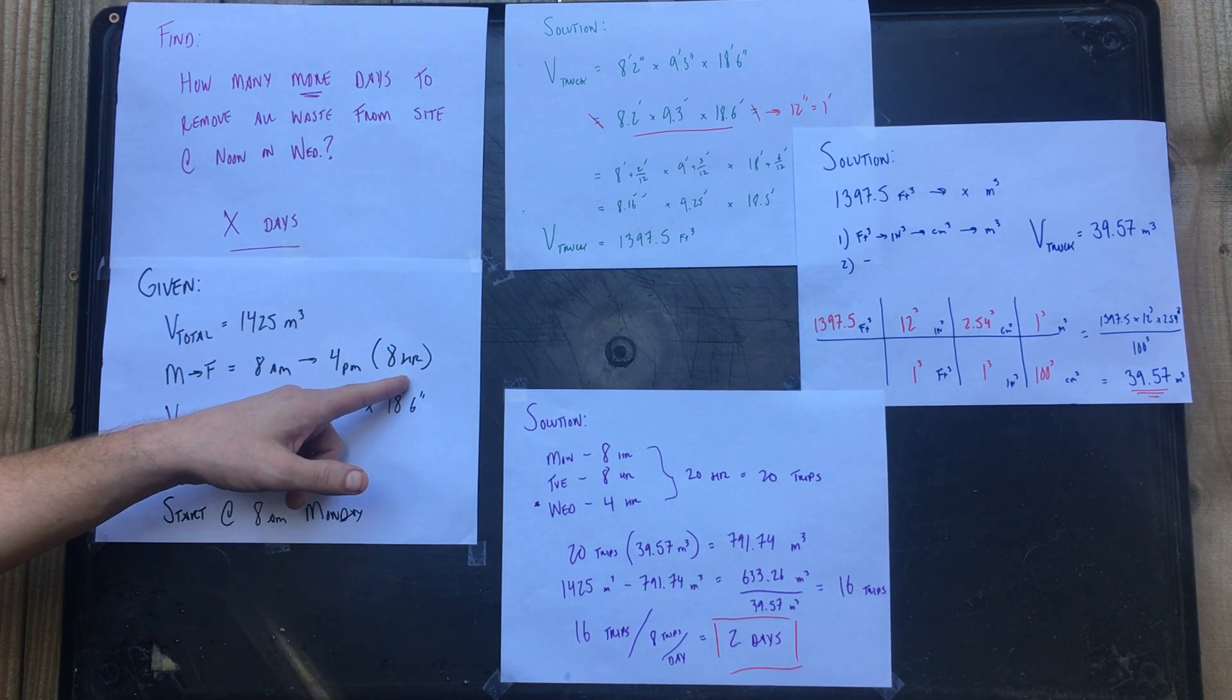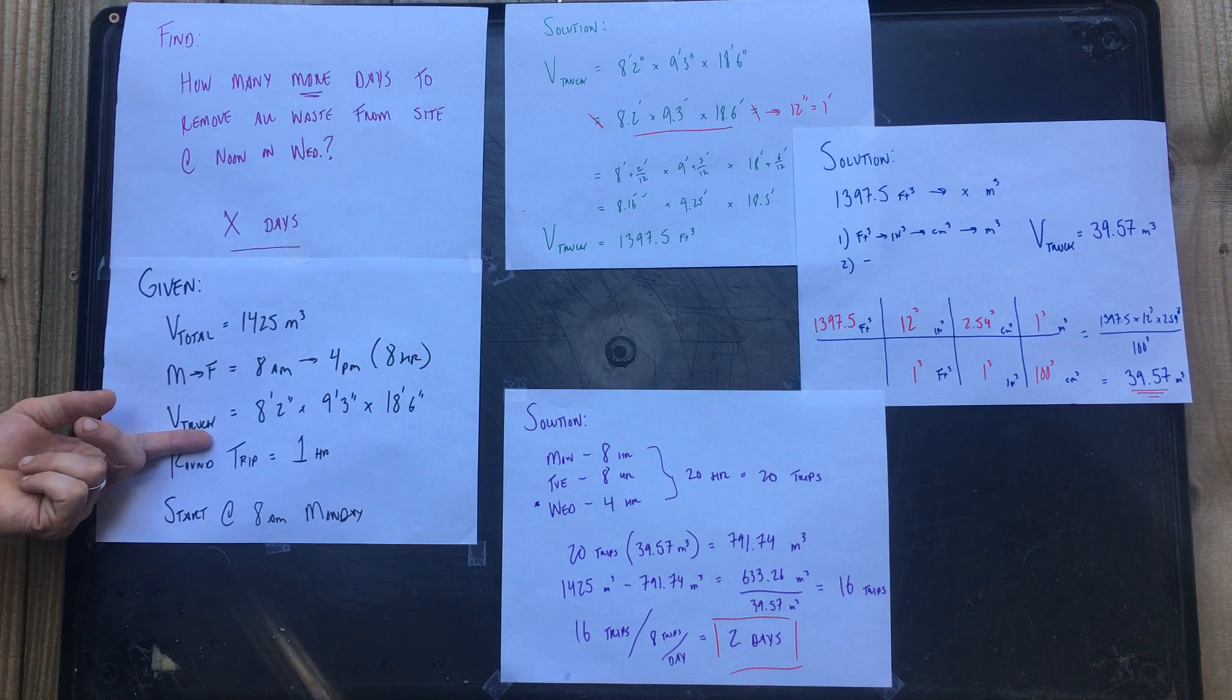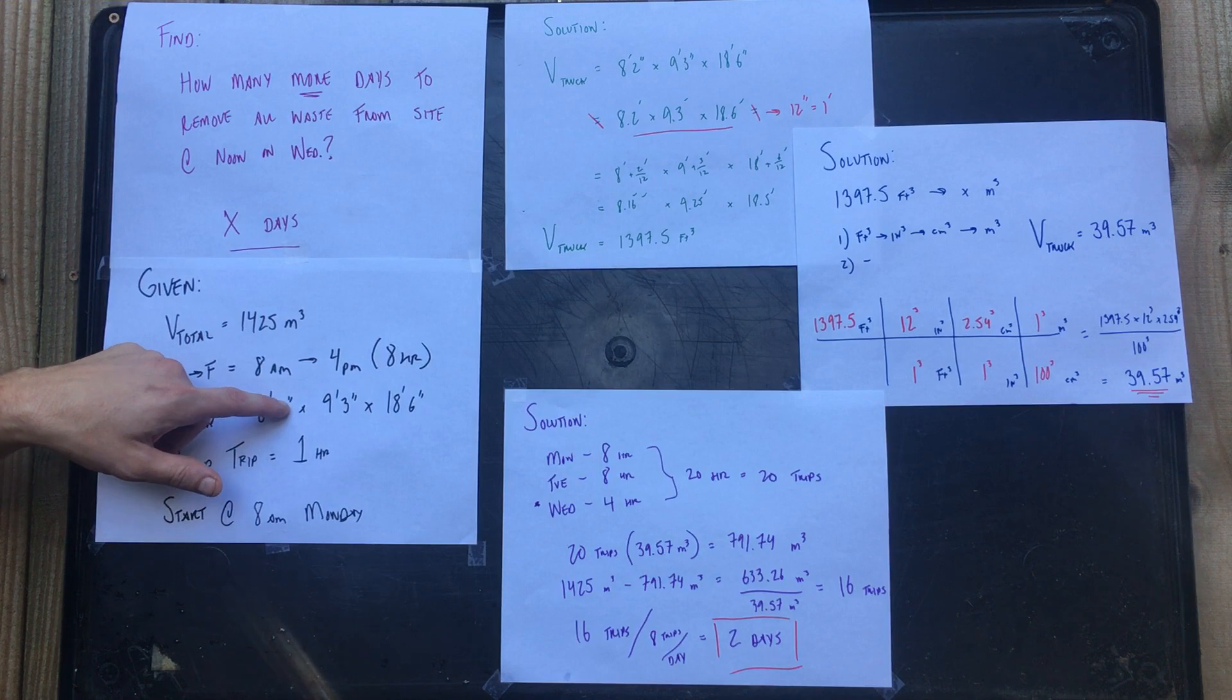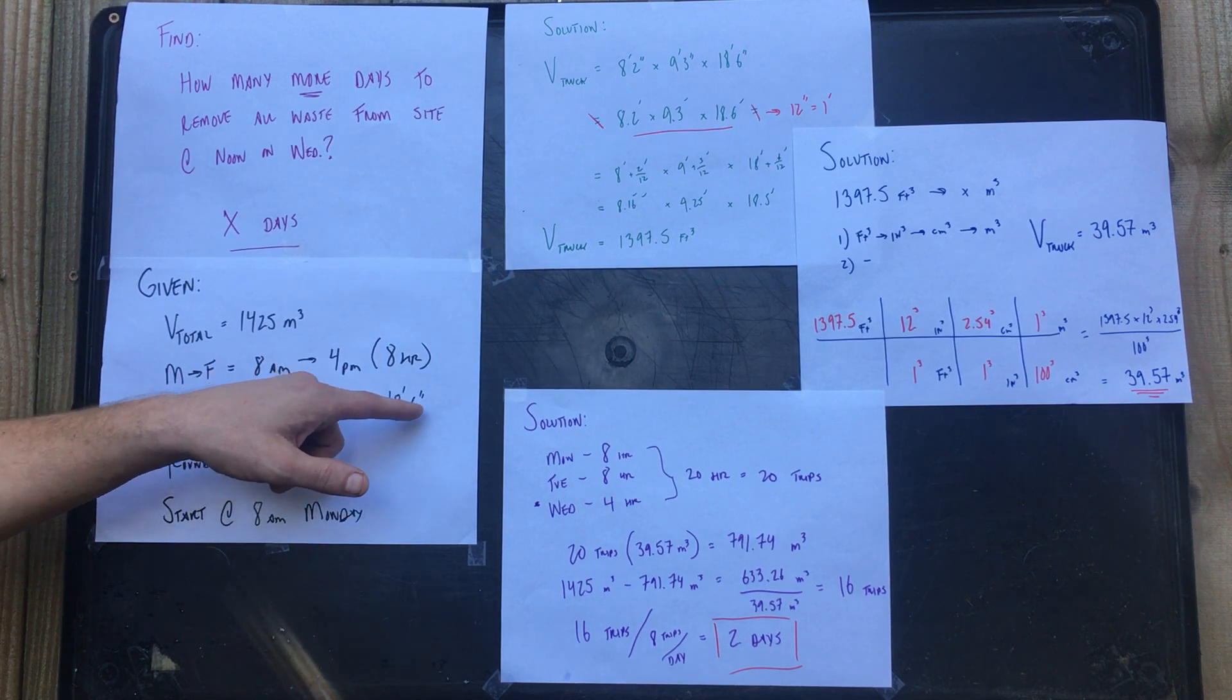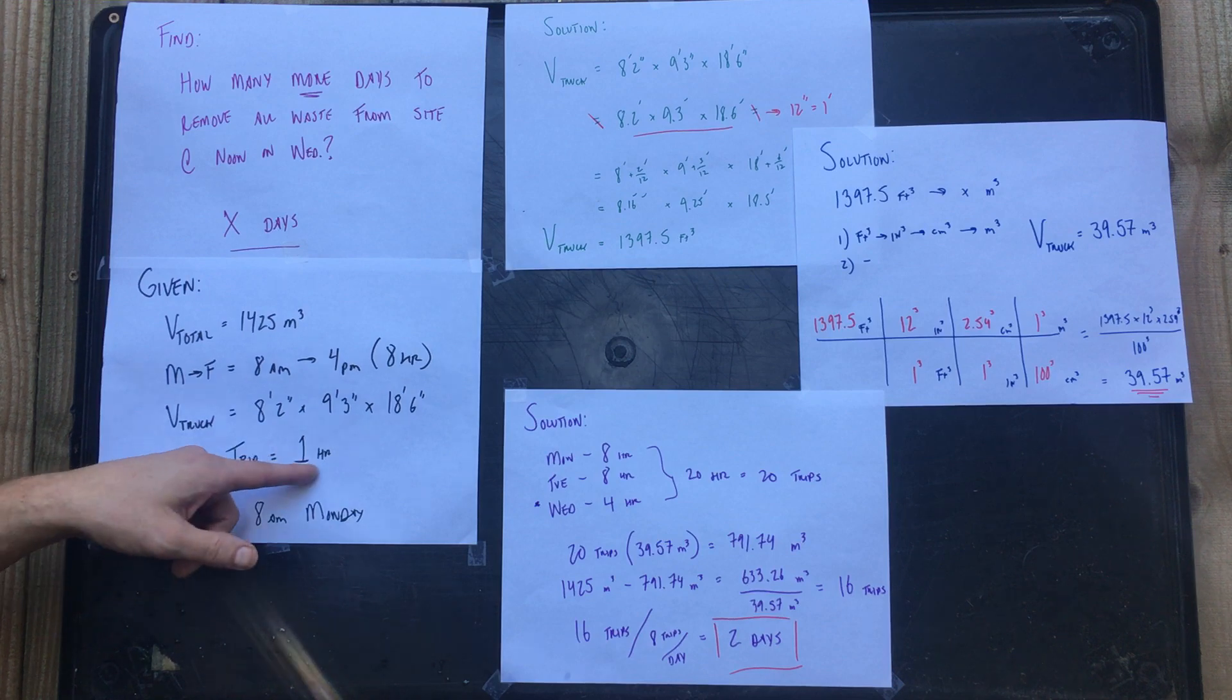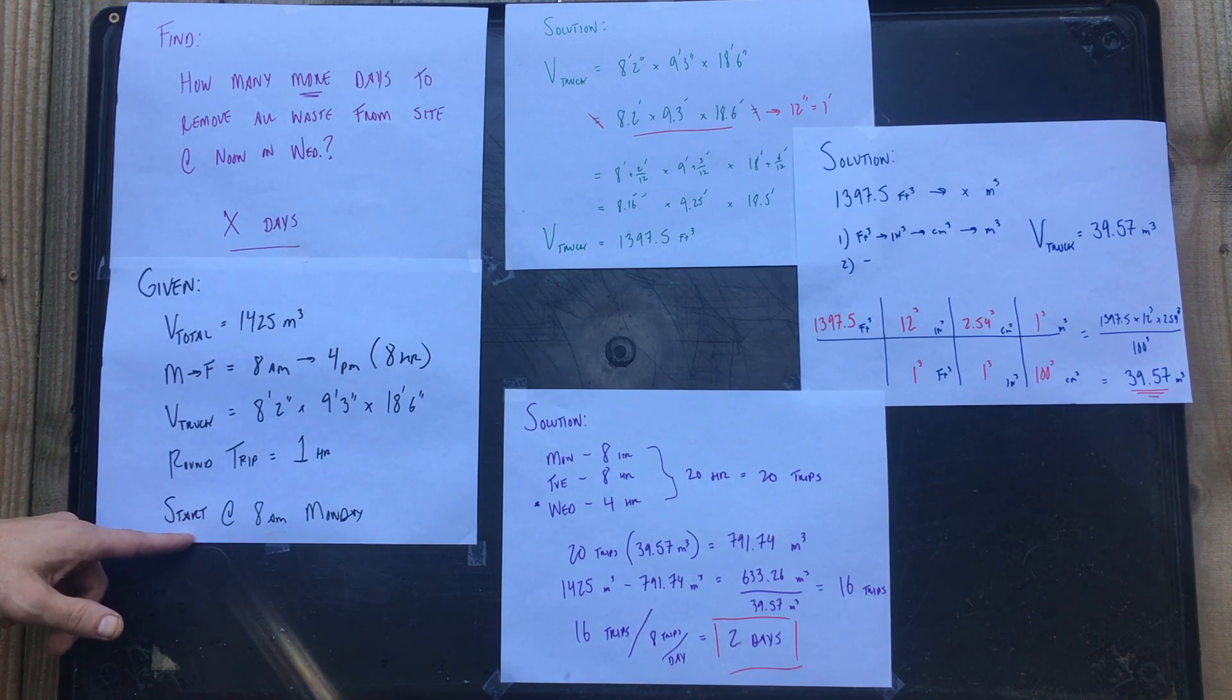Next thing we have is the volume of the truck: 8 feet 2 inches (notice one dash is feet, two dashes is inches), 9 feet 3 inches, 18 feet 6 inches. Round trip to the dump and back takes one hour, and starts Monday at 8.